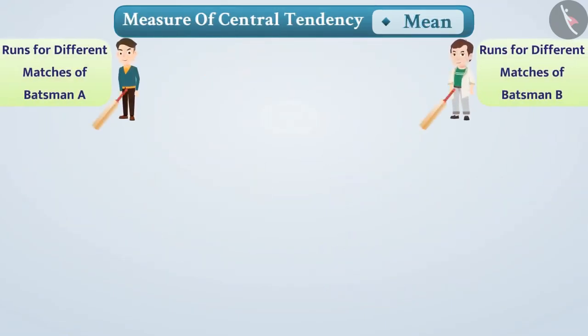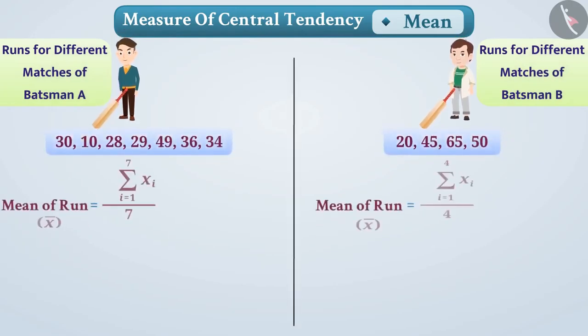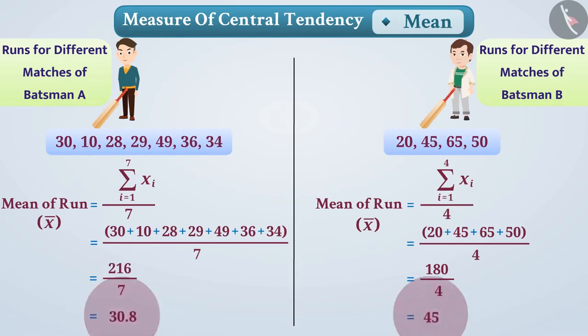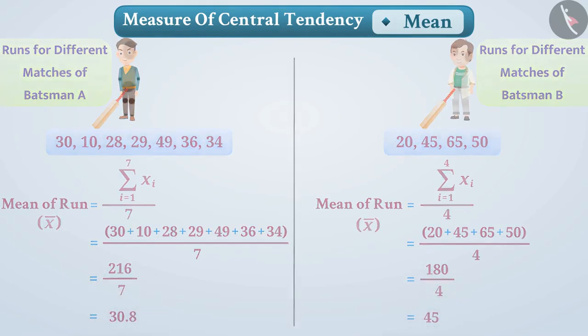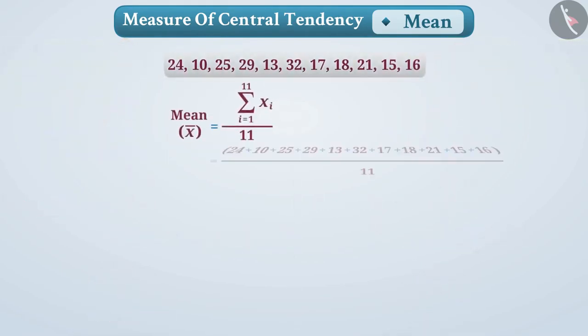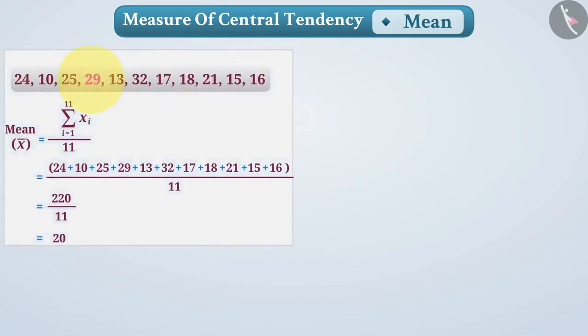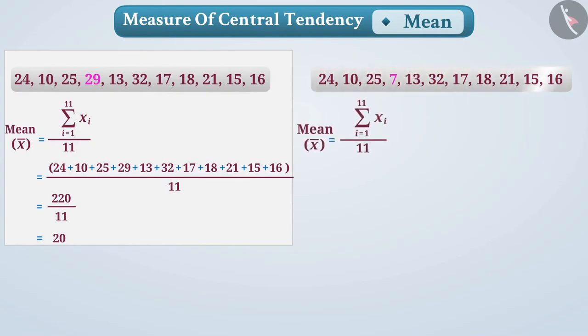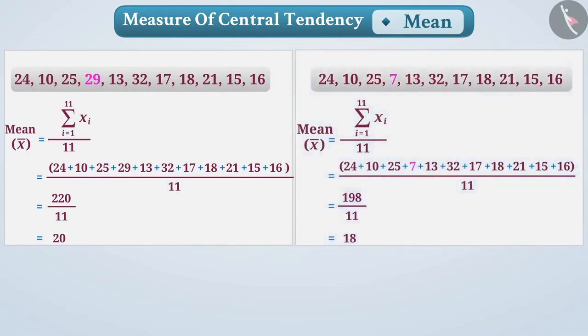Similarly, if we have to compare the performance of two batsmen, then it will be more useful to compare them by finding the mean of their runs. Here are some observations; their mean is 20. If we change the observation 29 and write 7, then with the new observation the mean is 18.